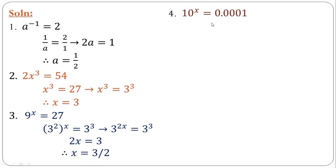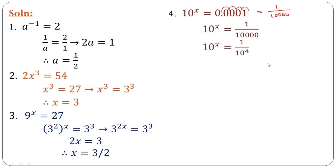In the fourth example, we find x where the right-hand side is a decimal. Whenever you have a decimal, convert it to a fraction. 0.0001 equals 1 over 10000. Moving the decimal point four places, you add four zeros to get 10000, so this is 10^4. By the negative index rule, this becomes 10 raised to the power of negative 4. The goal is to get equal bases, and once achieved, the powers become equal.